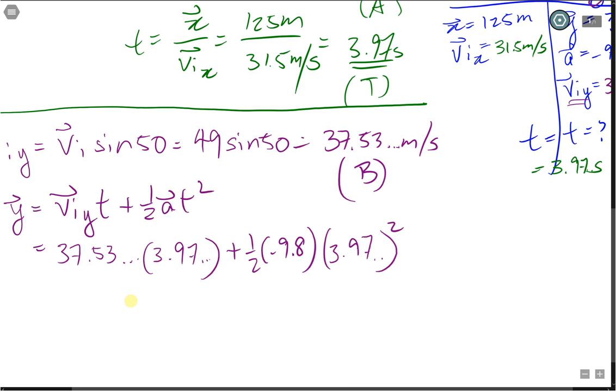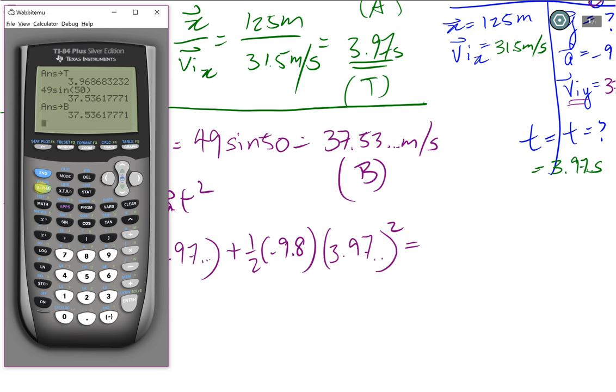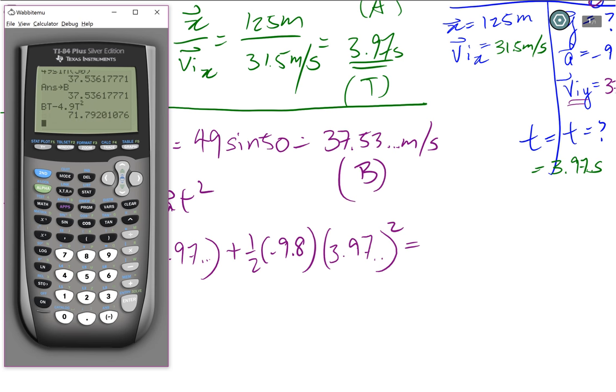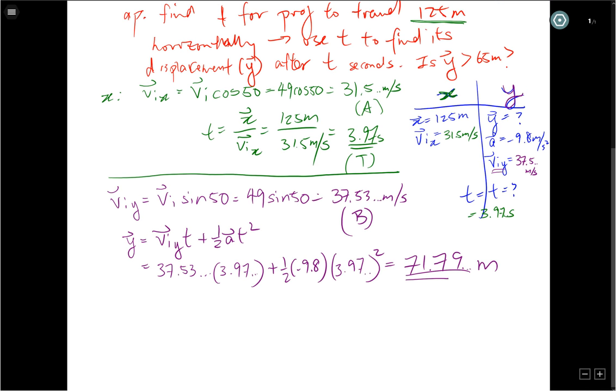Putting this into our calculator, I will get my B. So remember, I'm going to use my stored value for B. I'm going to multiply that one by my time, which is stored as T. Then I'm going to add 1/2 negative 9.8, which is the same as subtracting 4.9, times our time squared, alpha T squared. This one gives me 71.79 meters of displacement. That's my Y.